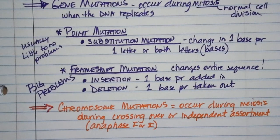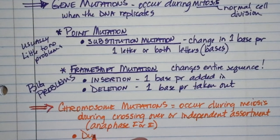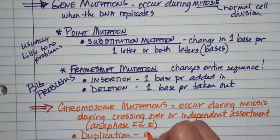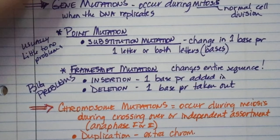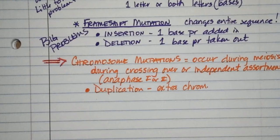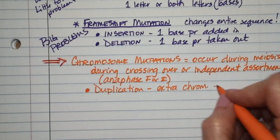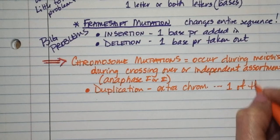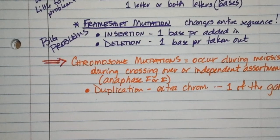First is duplication, which is exactly what it sounds like. Duplication means that you have extra chromosomes. Usually it's just one. You have an extra chromosome. The gamete has one of the gametes has more than one copy. Each time we produce sex cells, we get four. So one of the gametes is going to have an extra chromosome, and the other's not going to have enough.